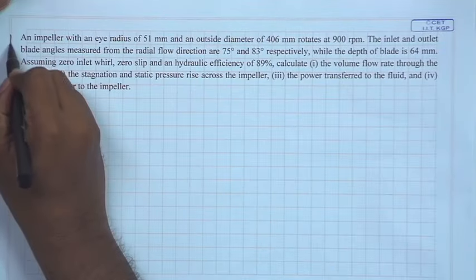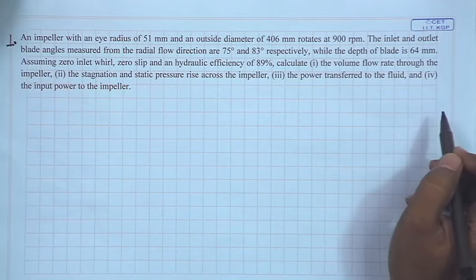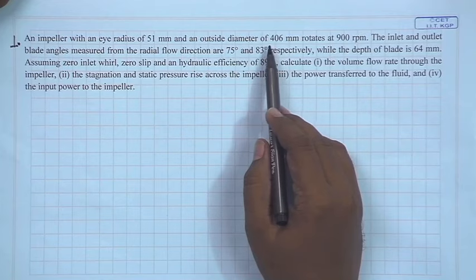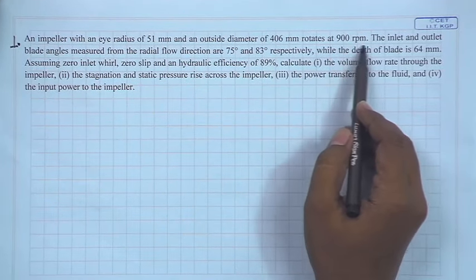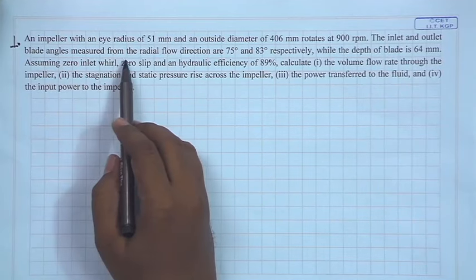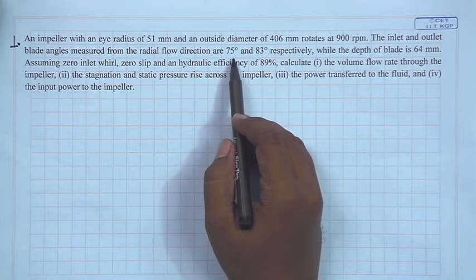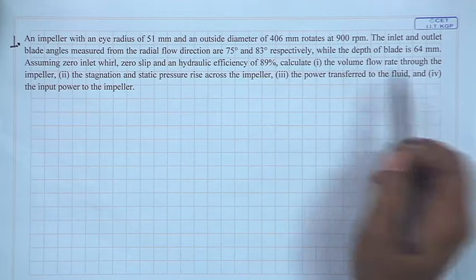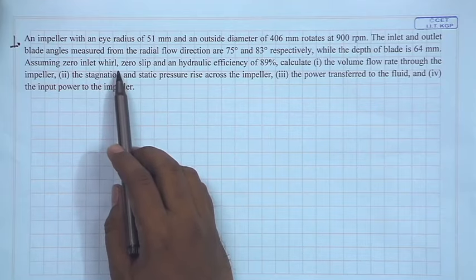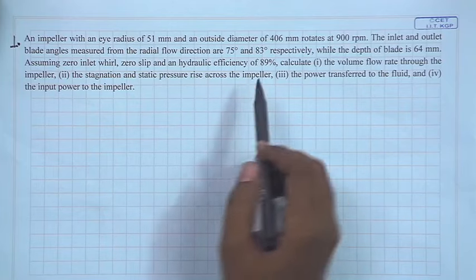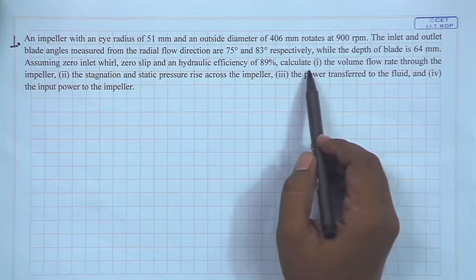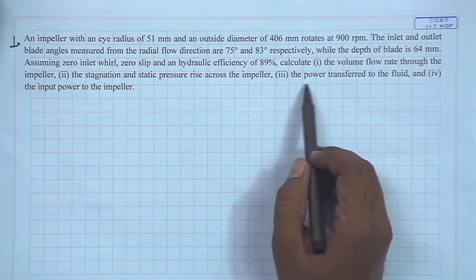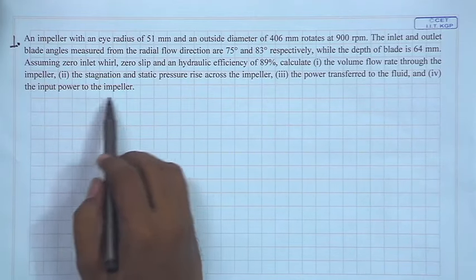The problem statement is as follows: an impeller with an eye radius of 51 mm and an outside diameter of 406 mm rotates at 900 rpm. The inlet and outlet blade angles measured from the radial flow direction are 75 degrees and 83 degrees respectively, while the depth of the blade is 64 mm. Assuming zero inlet swirl velocity, zero slip, and a hydraulic efficiency of 89%, calculate the volume flow rate, stagnation and static pressure rise across the impeller, the power transferred to the fluid, and the input power to the impeller.